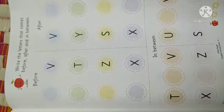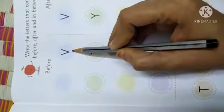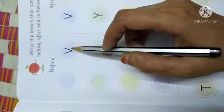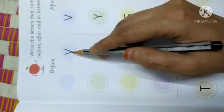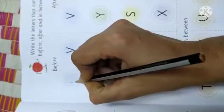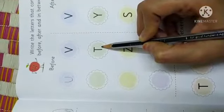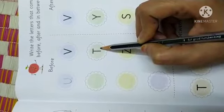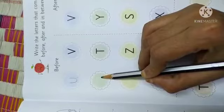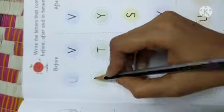First we will learn before. Before means jo letter pehle aata hai. See, V. V ke pehle ke aata hai? What will come? U. What is this? T. Yeh koun sa letter hai? T. Toh, T ke pehle ke aata hai? Tell me. S.